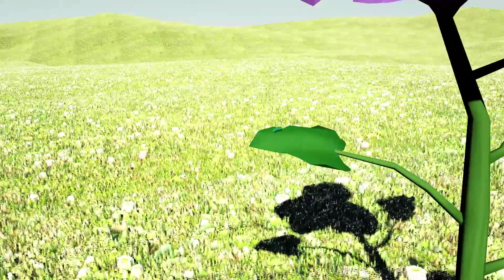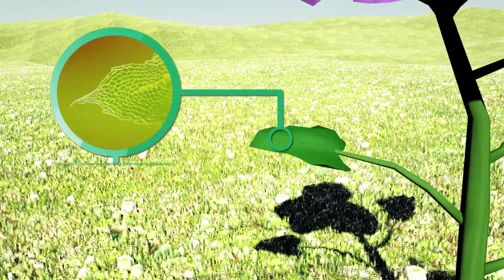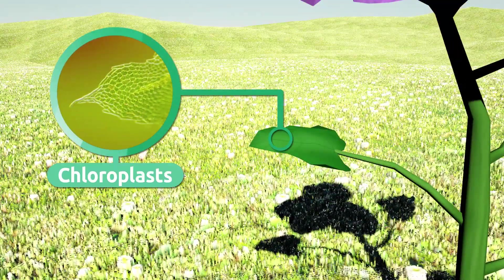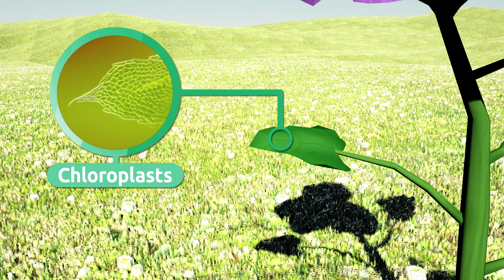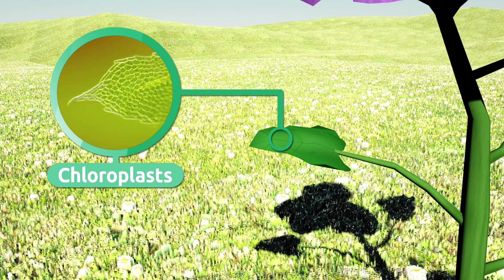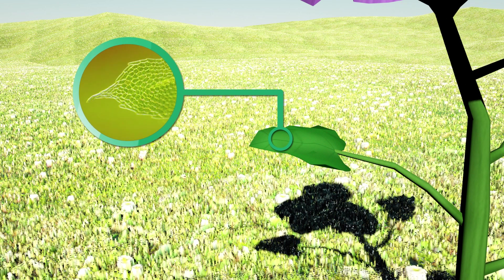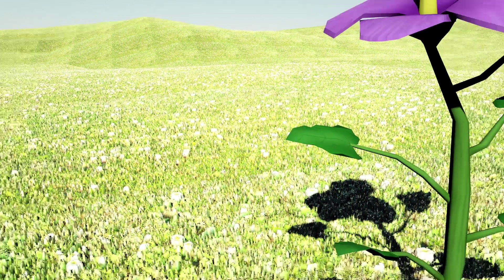Leaf cells are made up of chloroplasts, which contain a pigment called chlorophyll. Chlorophyll gives plants their green color. Chloroplasts capture light energy.